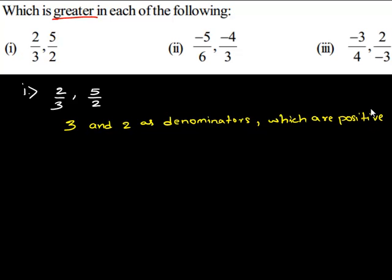So these rational numbers already have a positive denominator. Now it is easier to compare rational numbers if they have a common denominator. So let us express these rational numbers with a common denominator and that can be done by expressing each of these rational numbers with its LCM as common denominator.